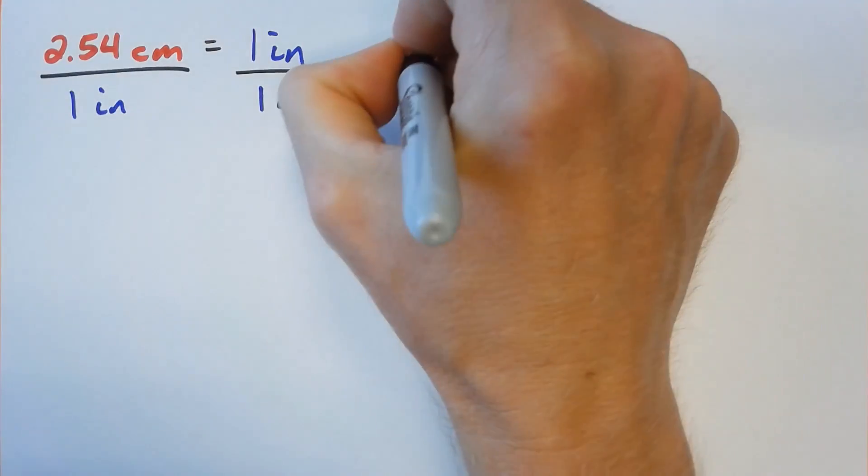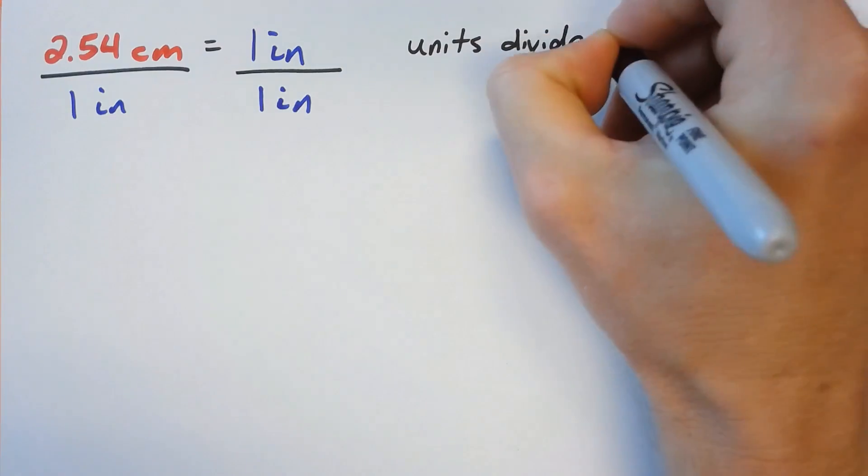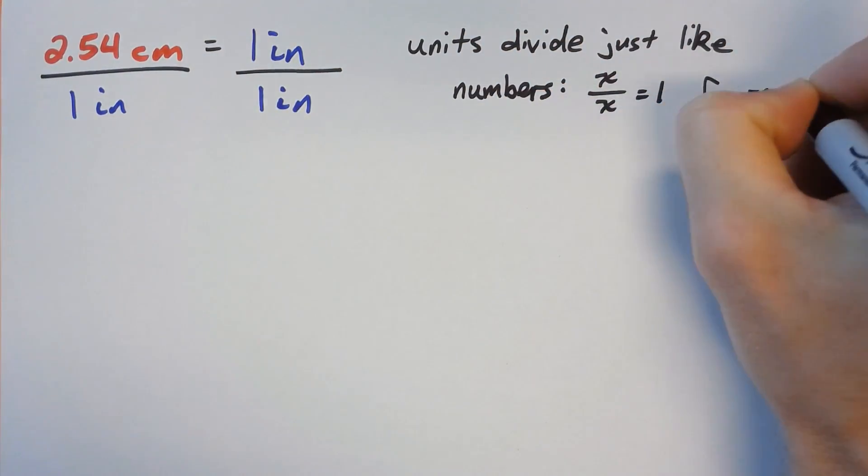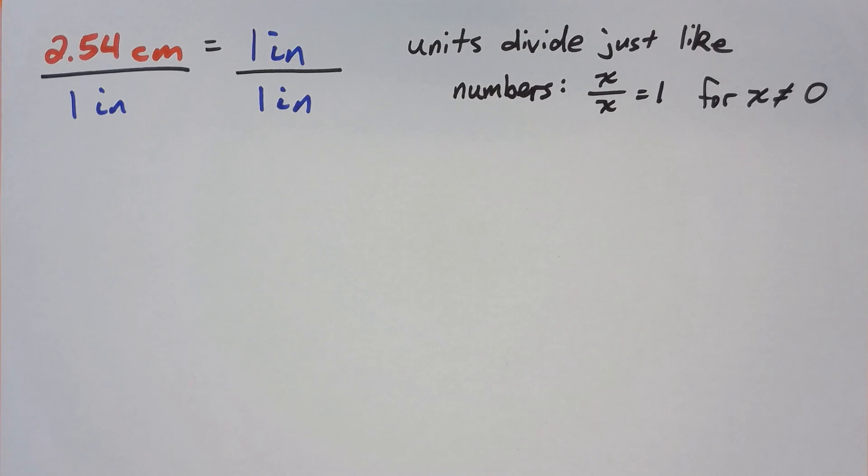Let us divide both sides by 1 inch. On the right side of the equation, we have 1 inch divided by 1 inch. Fortunately, units divide just like numbers do, and x divided by x is 1 for x not equal to 0.